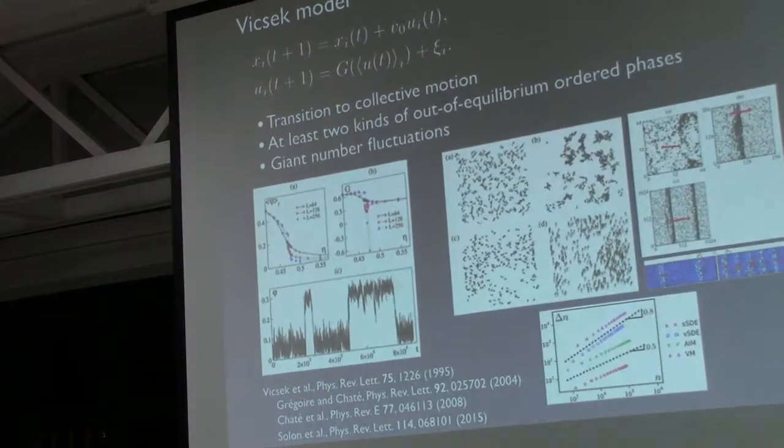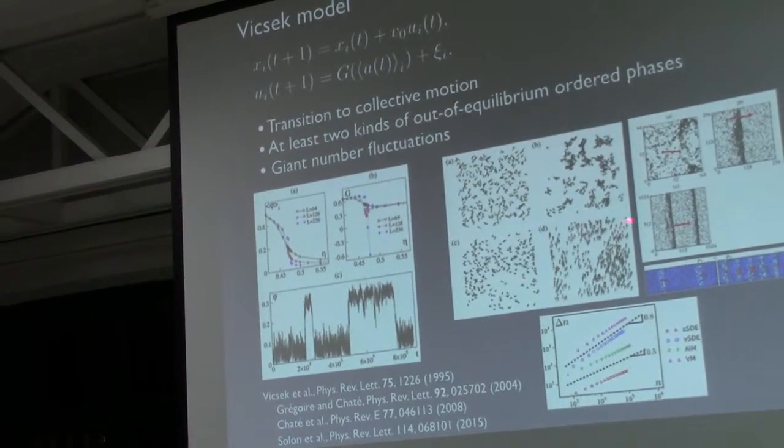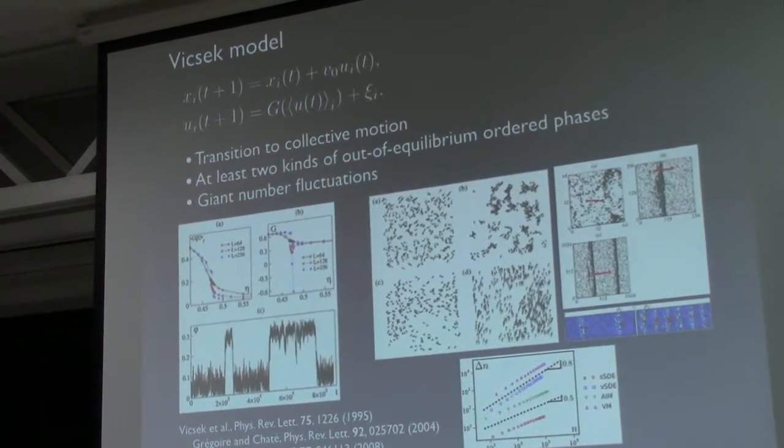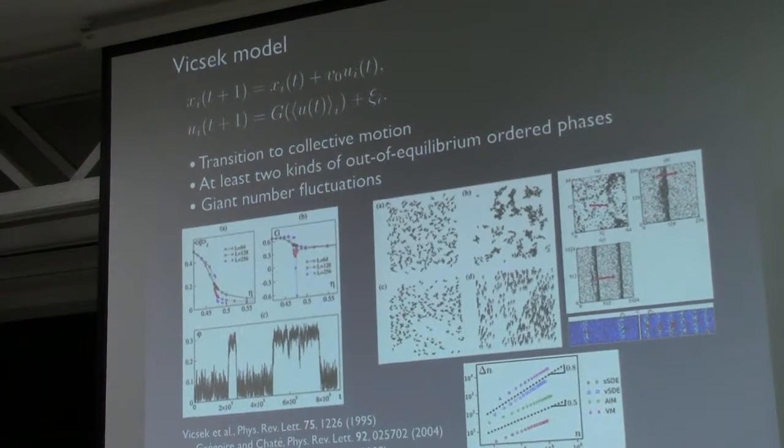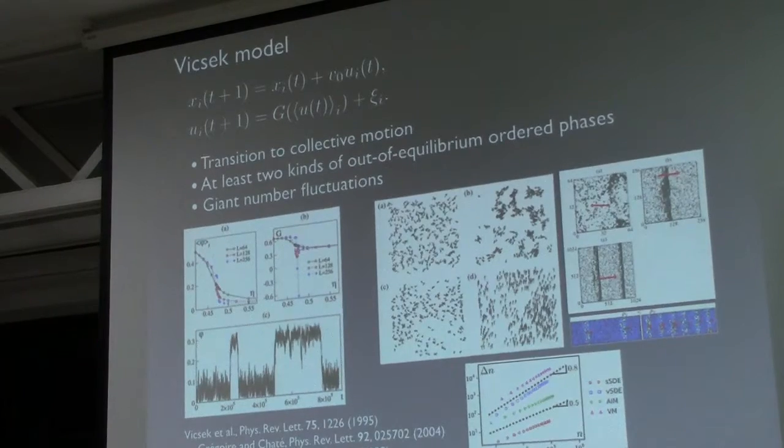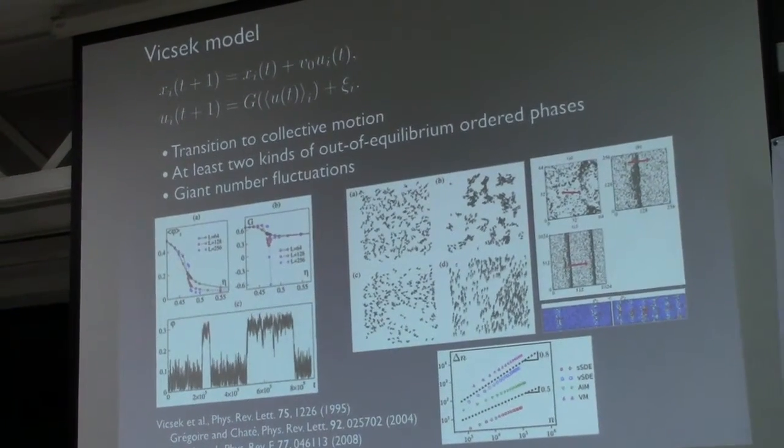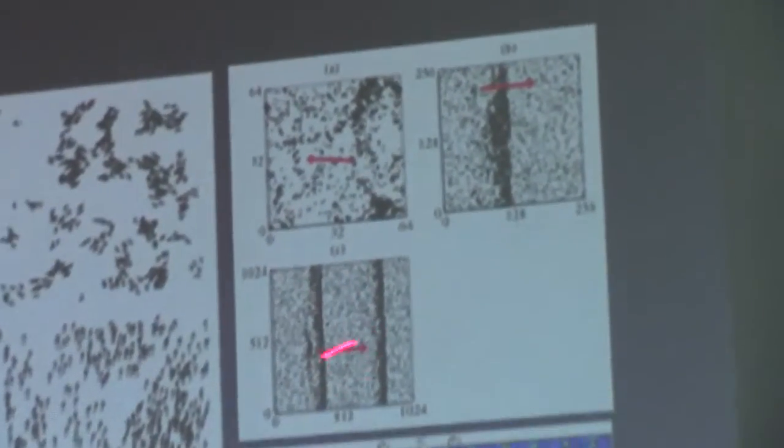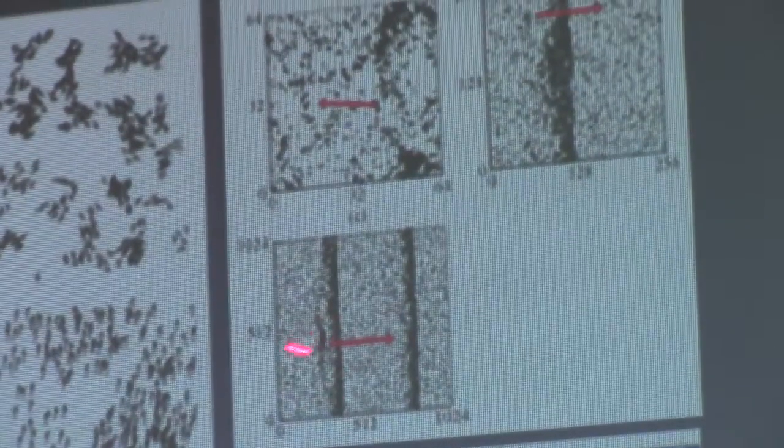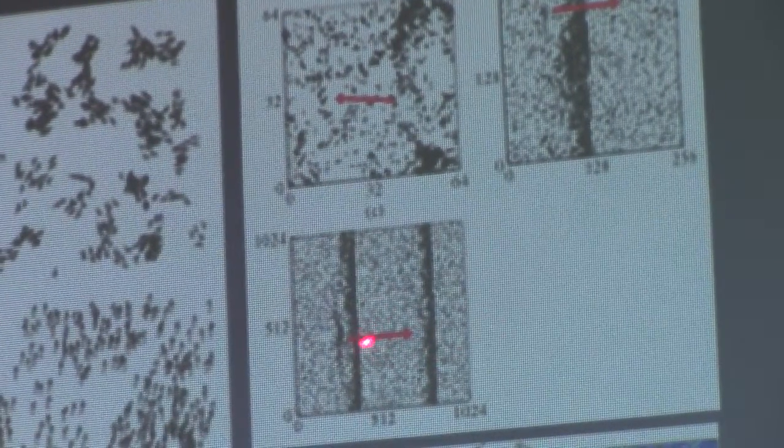This would be a disorder state and this would be an order state. An interesting thing happens when you start to look at larger systems in terms of the size compared to the interaction radius, because these particles interact locally within a circle. When you increase the size of the system, there are at least two ordered phases that can be identified. This is a snapshot in a two-dimensional system. You can see how these dense bands of particles develop that are ordered within themselves and moving to the right, and the rest is like a disordered gas.